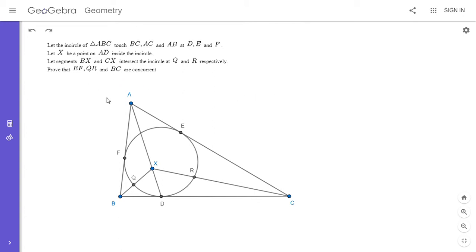Alright, I'm going to go over my solution. We have a triangle ABC, and the incircle touches BC, CA, and AB at points D, E, and F. X is a random point on the segment AB that lies inside the incircle. BX meets the incircle at Q, and CX meets the incircle at R. We want to prove that EF, QR, and BC are concurrent. I haven't drawn those three lines, but that's what we're trying to prove here.